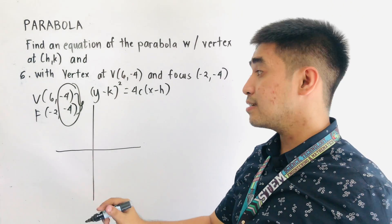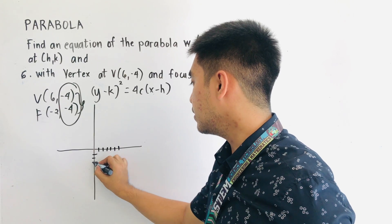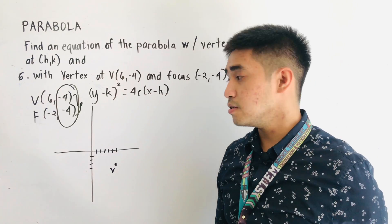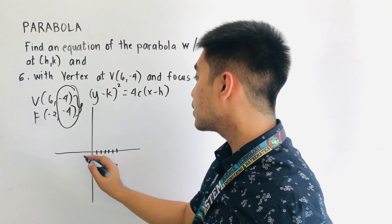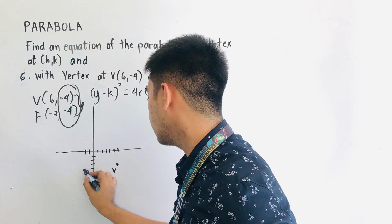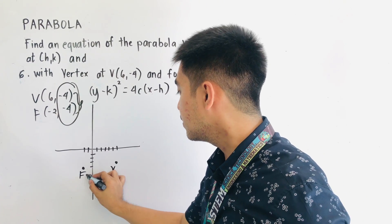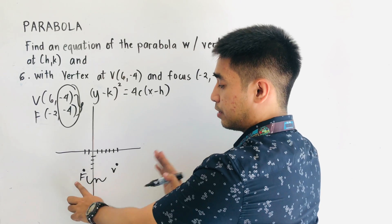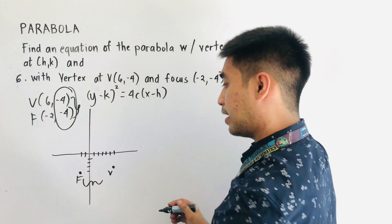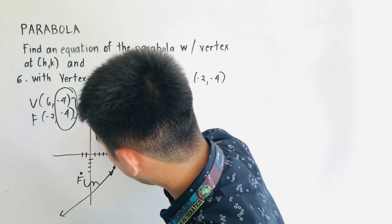We are given the vertex located at (6, -4), so we plot that point. We are also given the focus located at (-2, -4) and we plot that as well. The vertex is to the right of the focus, and the focus is to the left of the vertex. Therefore, our parabola is opening to the left.